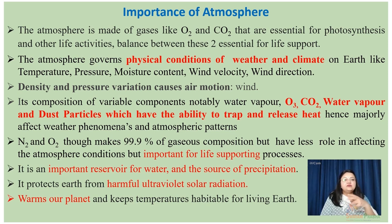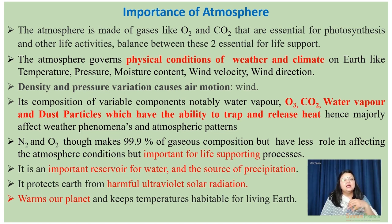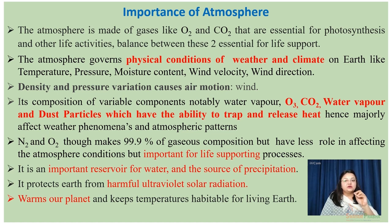Whenever we talk about global warming and increasing CO2 concentration in the atmosphere, we are concerned because CO2 is an important greenhouse gas with the ability to trap heat on the surface of earth. If its concentration increases over time, the currently conducive temperature that helps balance life on earth may not be maintained, and many species sensitive to temperature fluctuations could go extinct. The atmosphere not only governs the physical conditions of weather and climate, but these physical conditions in turn balance the biological activity of plants, animals, and living creatures on earth. Physical conditions like temperature, pressure, wind velocity, and wind direction create unique conditions in different parts of the world.